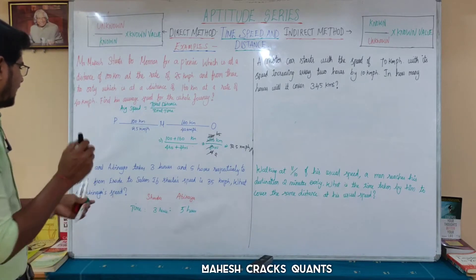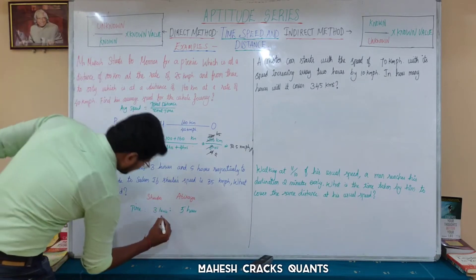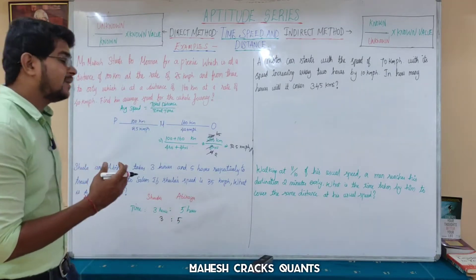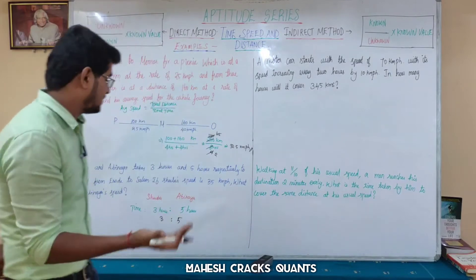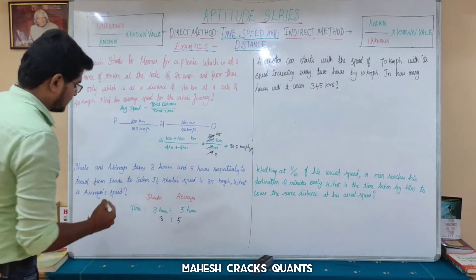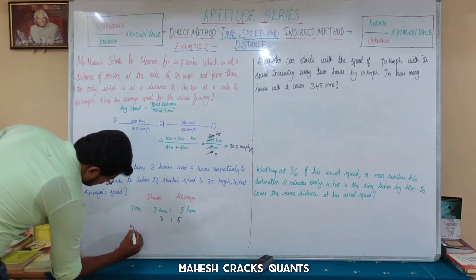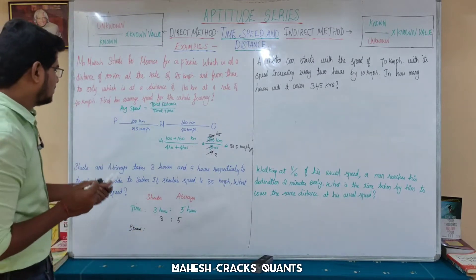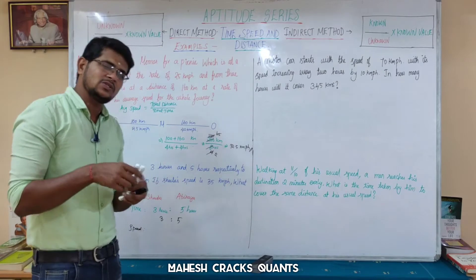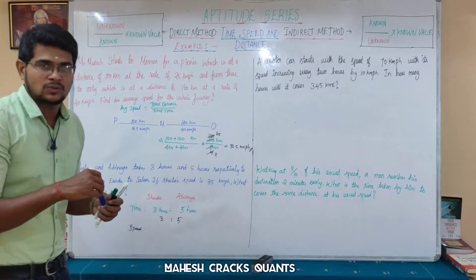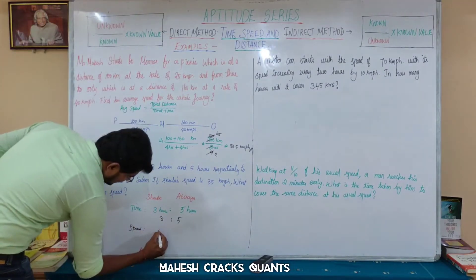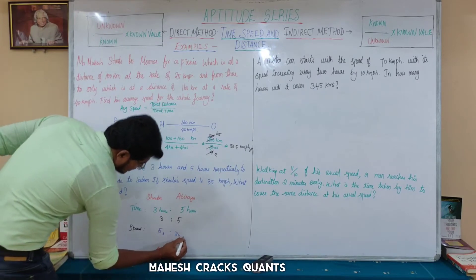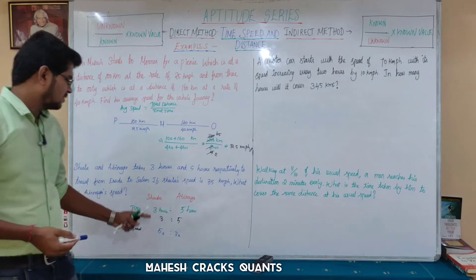The time ratio of Shila to Abinaya is 3 is to 5. Since time is inversely proportional to speed, the speed ratio will be the inverse of the time ratio.